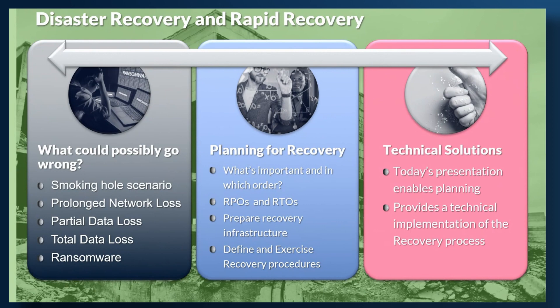The important thing is that you plan for what to do if any of these things happen — what applications you have, which are important, and in what order you would recover them. Most people are familiar with RPO, Recovery Point Objective, which refers to how much data loss — what chunk of data stored in your data center — you can afford to lose. And Recovery Time Objectives, RTOs: how long do you require to get back up and running? We've heard of companies with such sensitive data, owing to things like chemical leaks, that they need their data back within a few seconds.